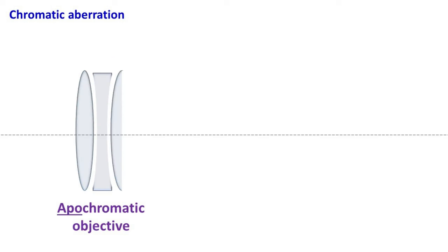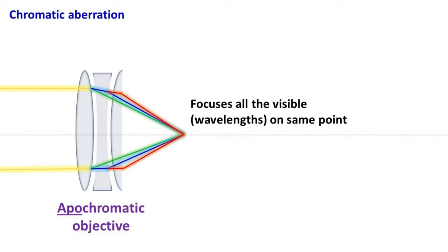Apochromatic Objective. The objective lens which focuses all the visible wavelengths on a single point is called apochromatic objective. The image formed by apochromatic lens is free from chromatic aberration.